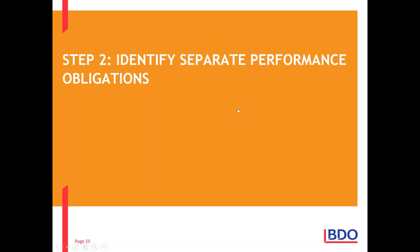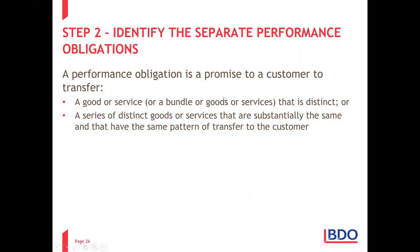Step 2 is around identifying separate performance obligations. We've assumed we've met the criteria for a contract in step 1 and combined contracts where necessary. Now in step 2, identify the separate performance obligations. A performance obligation, in plain English, is what we've promised to provide to the customer — goods, services, or a bundle of goods or services that is distinct. Or it could be a series of goods or services that are substantially the same, have the same pattern of transfer, and are therefore bundled together as a distinct series.